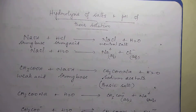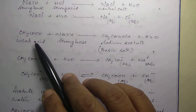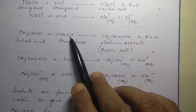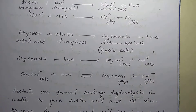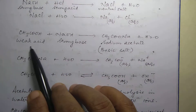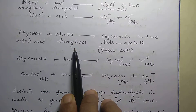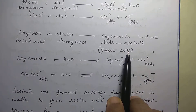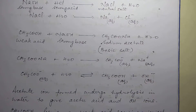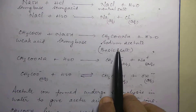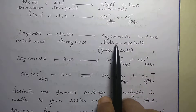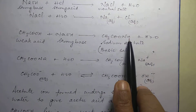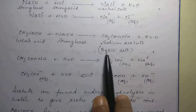Let's take another example. Acetic acid plus NaOH gives you sodium acetate plus water — again acid plus base giving salt and water. Here acetic acid is a weak acid and NaOH is a strong base. The salt formed from a weak acid and a strong base will be a basic salt, because the effect of the strong base comes through in the salt.